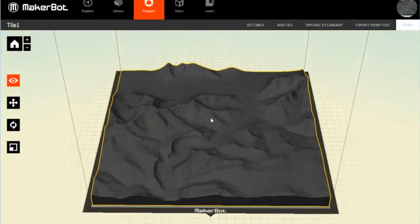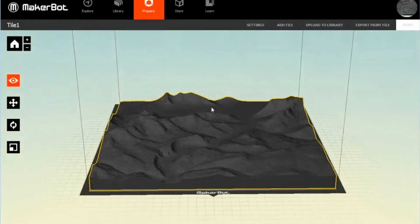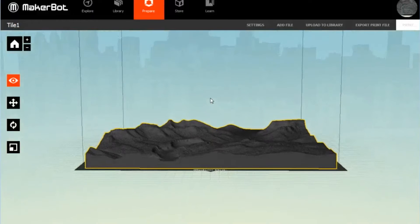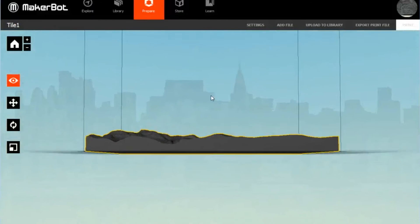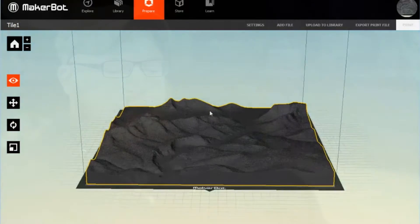We've gotten the process of taking geospatial data downloaded from USGS and turning it into a map like this down to about 20 minutes. That's pretty quick. But then the map takes between 40 and 60 hours to print.